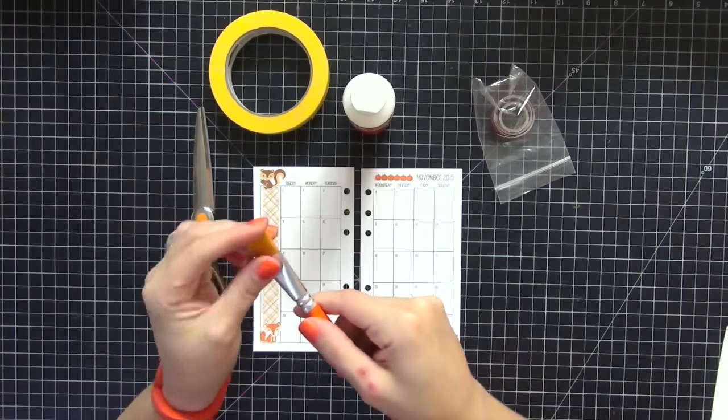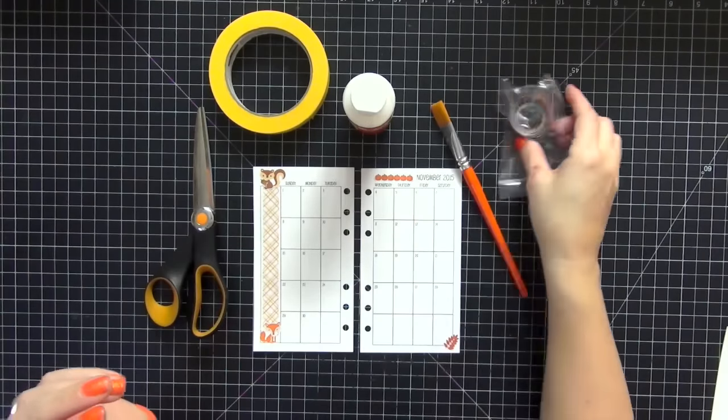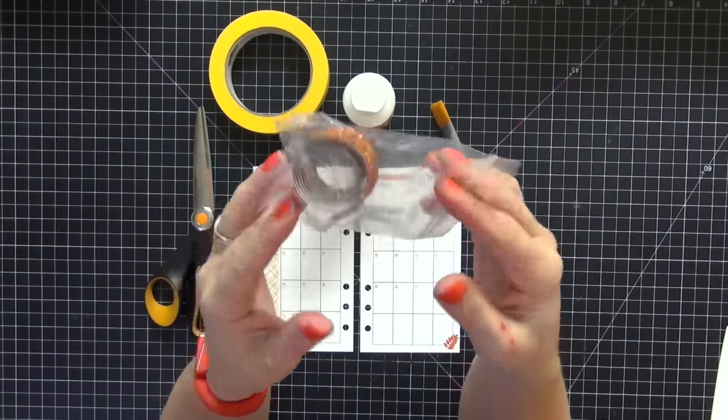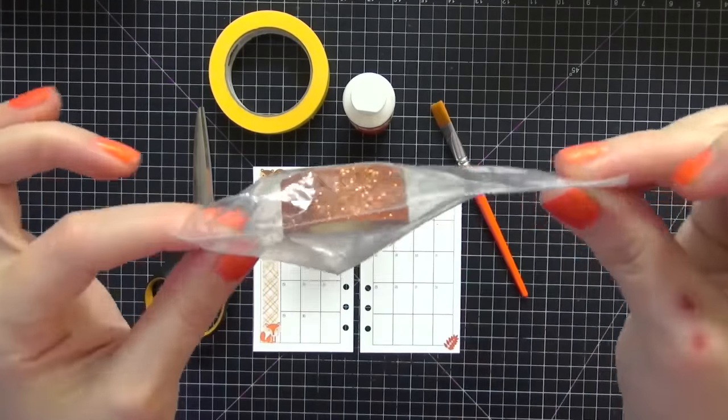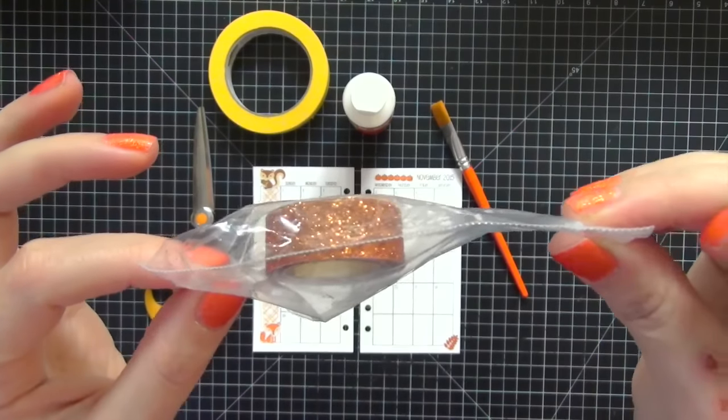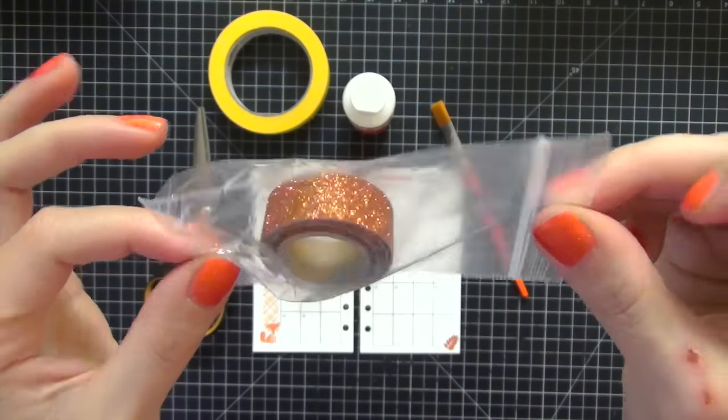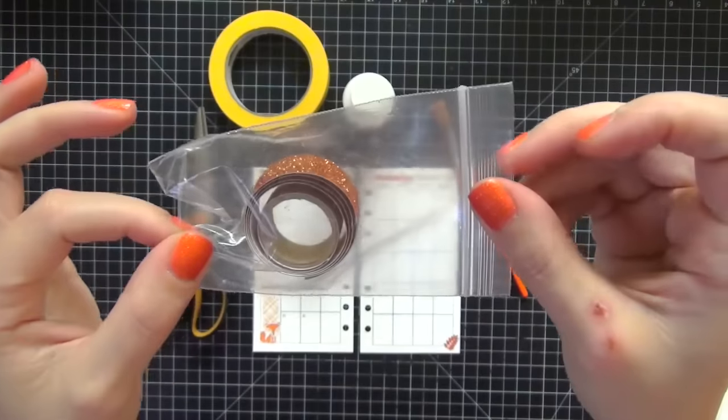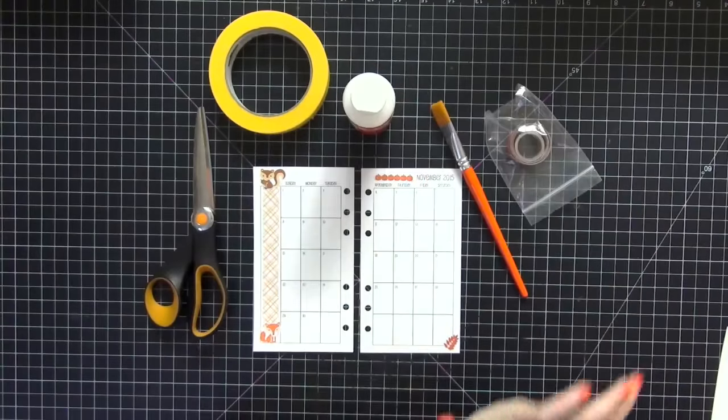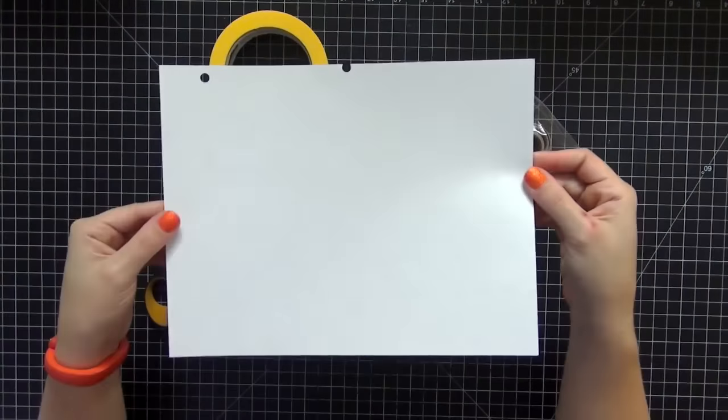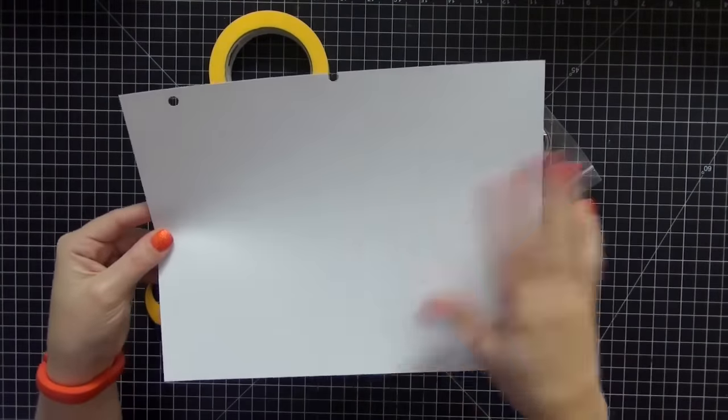And of course, the offending Michaels glitter tape. As you can see, I keep it in this little baggie because I cannot stand to have it even out on my desk because of the mess that it makes. And you'll need one last item, which is just a piece of scratch paper.